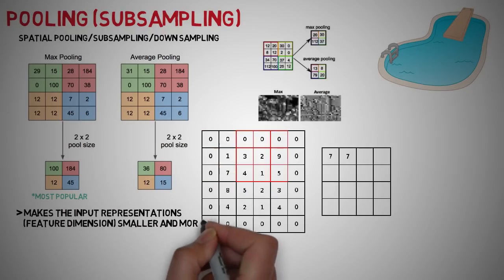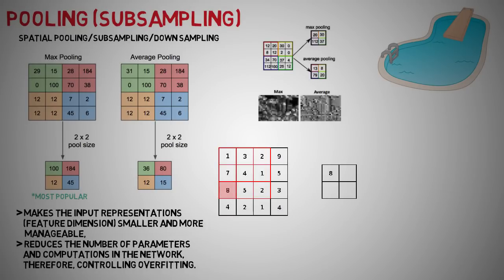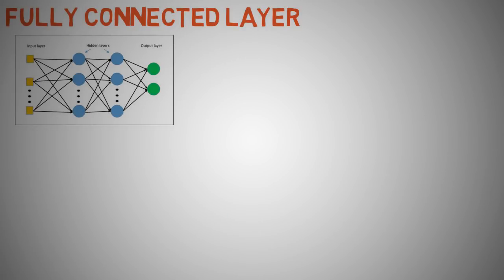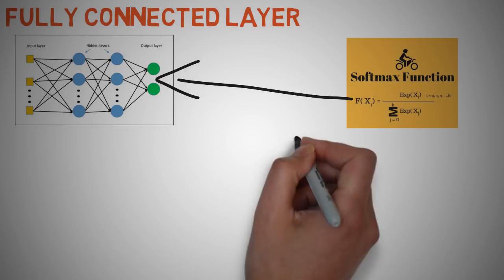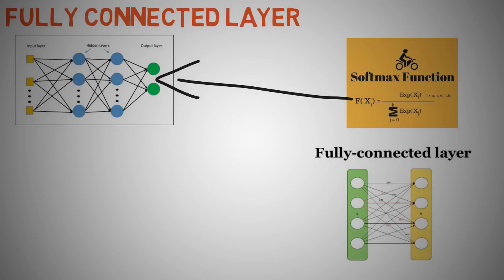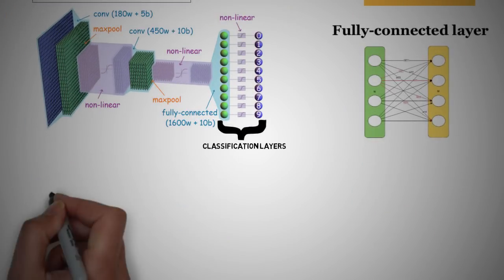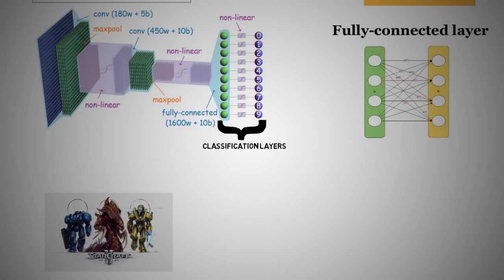Some benefits of pooling are that it makes the input representation or feature dimensions smaller and more manageable. It also reduces the number of parameters and computations in the network thereby controlling overfitting. Fully connected layer: the fully connected layer is a traditional multi-layer perceptron like we discussed in our ANN lecture but that also uses the softmax activation function in the output layer. The term fully connected implies that every neuron in the previous layer is connected to every neuron in the next layer. The output from the convolutional and pooling layers represent high level features of the input image. The purpose of the fully connected layer is to use these features for classifying the input image into various classes based on the training data set.